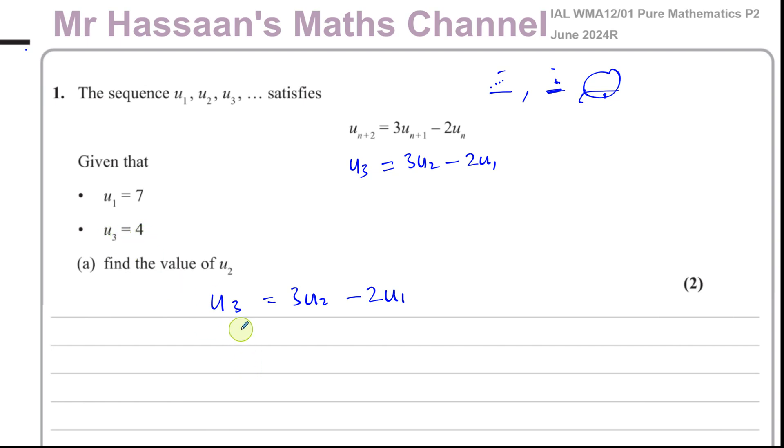We know u₁ is 7 and u₃ is 4, so this is 4. We have to find u₂—we don't know what u₂ is—and u₁ is 7, so that's 2 times 7. So you have 4 equals 3 times u₂ minus 14. Add 14 to both sides, you have 18. So 3 times u₂ equals 18. Divide both sides by 3, so we can say u₂ is equal to 18 over 3, which is 6. So that's u₂, which is 6. Simple as that.